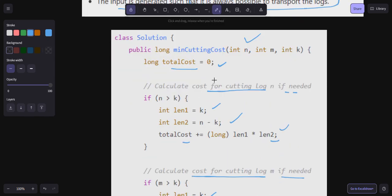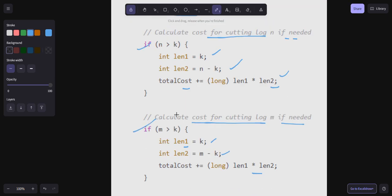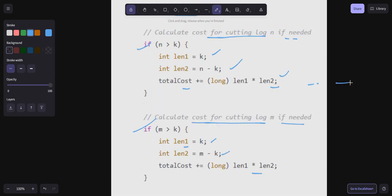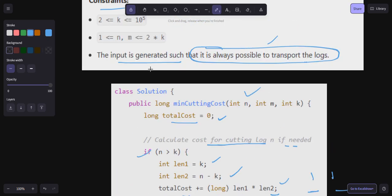Either this will execute or maybe this will execute. Only one of them will execute. Then we have to return the total cost. We have only three trucks, so if you split n, only one will execute.